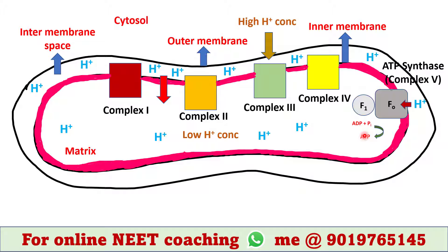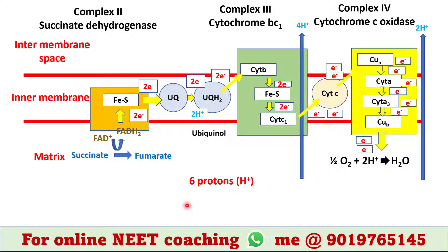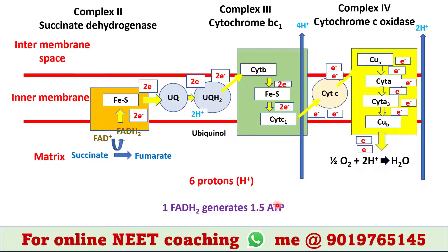Since the energy of oxidation-reduction reactions is utilized for ATP synthesis, the process is called oxidative phosphorylation. One ATP molecule is generated from the movement of 4 protons. Since one molecule of NADH pumps 10 protons, 2.5 molecules of ATP are generated from 1 NADH. Since one molecule of FADH2 pumps 6 protons, 1.5 molecules of ATP are generated from 1 FADH2.